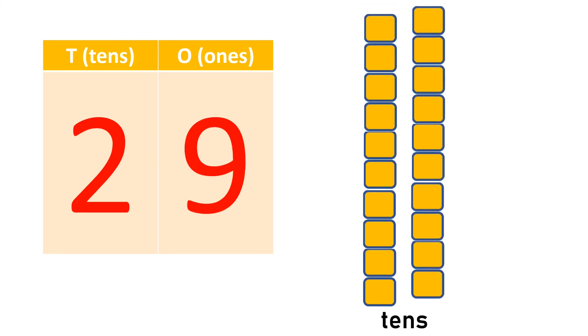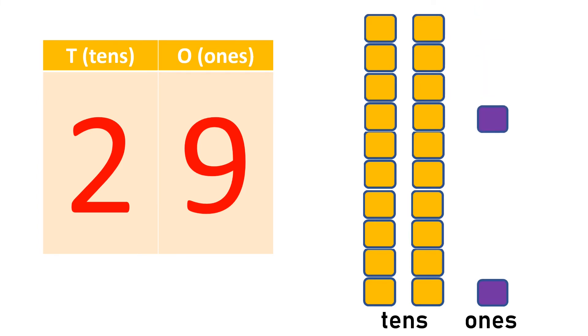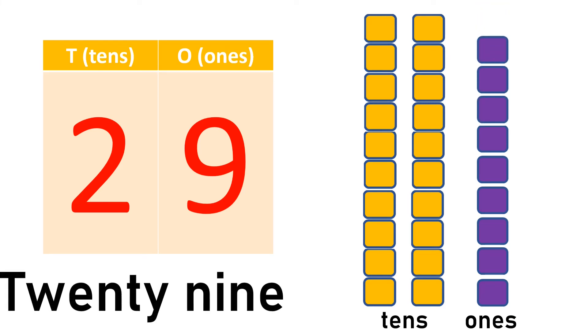3 tens and 1, 2, 3, 4, 5, 6, 7, 8, 9, 9 ones makes 29, TWENTY-NINE.